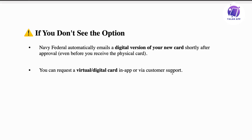A pro tip: if you're using an iPhone, go into the App Store, search for the Navy Federal app, and check if there's an update button. If it says 'Update,' click on it. Same goes for Android — go to the Google Play Store, search for Navy Federal, and click on the app. If there's an update available, you might be running an older version, and you need to update to the latest version to get this feature and actually see the cards in your app.